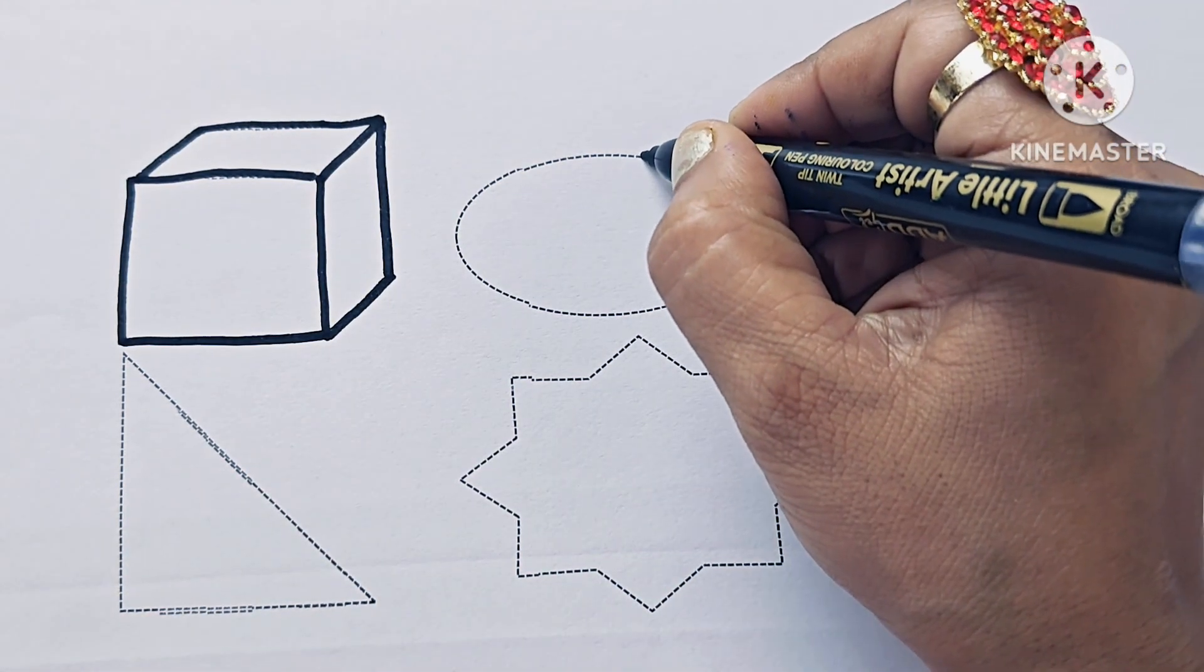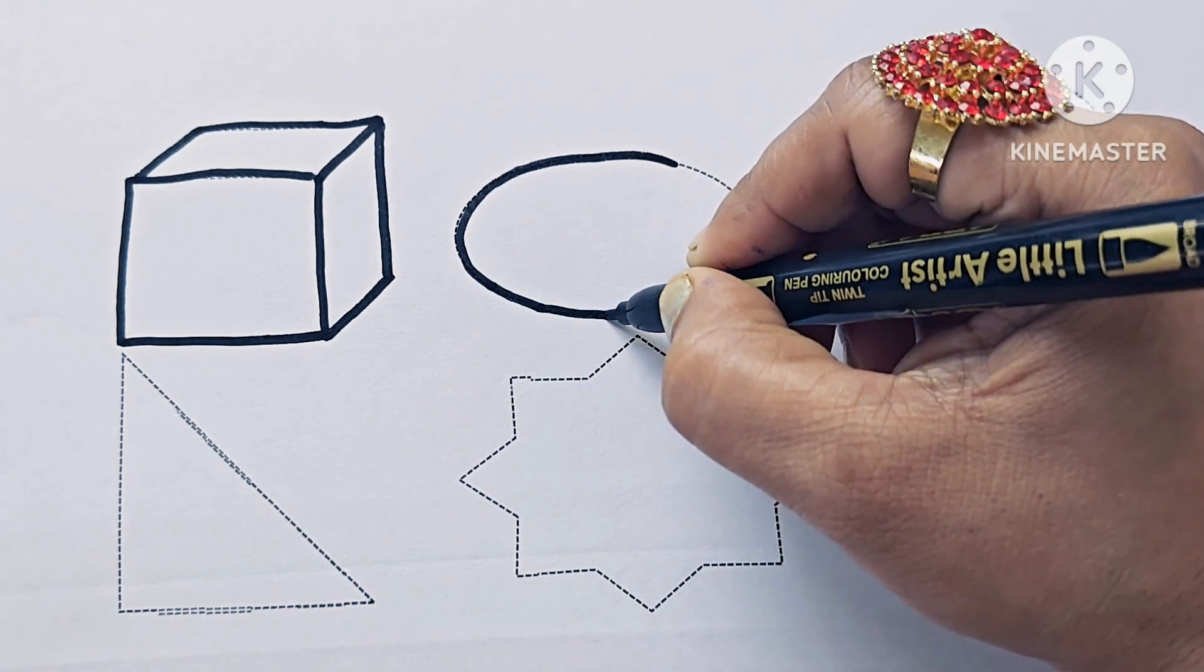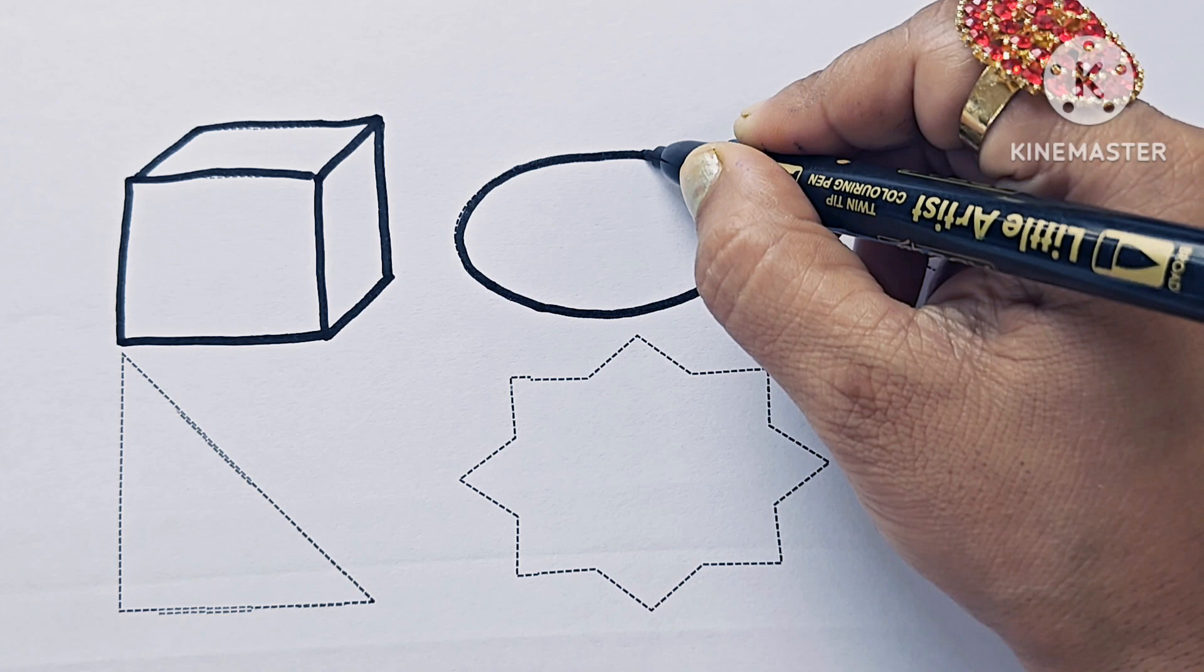This is Oval. Oval has no sides. Oval. Egg looks like Oval.